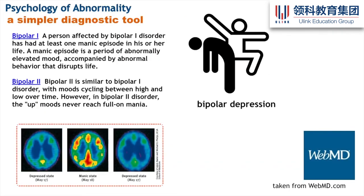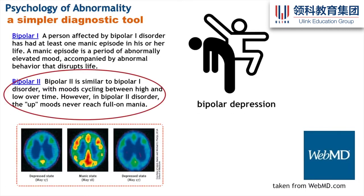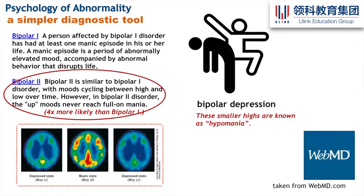There's a visual here showing a simpler diagnostic tool from WebMD. Bipolar two is more likely than bipolar one — four times more likely. So the less severe condition is actually more commonly diagnosed.